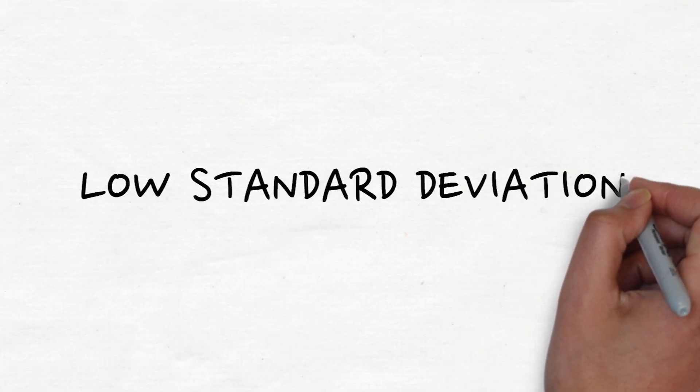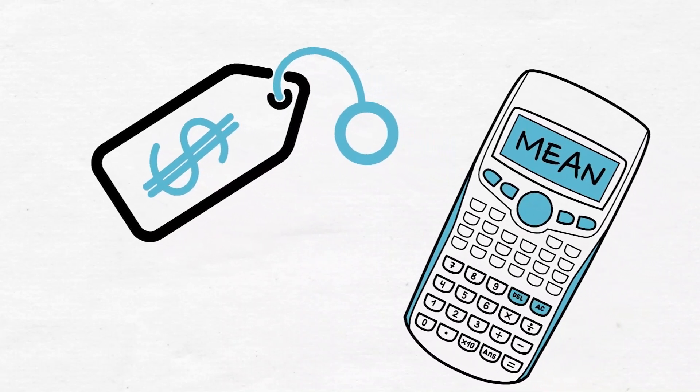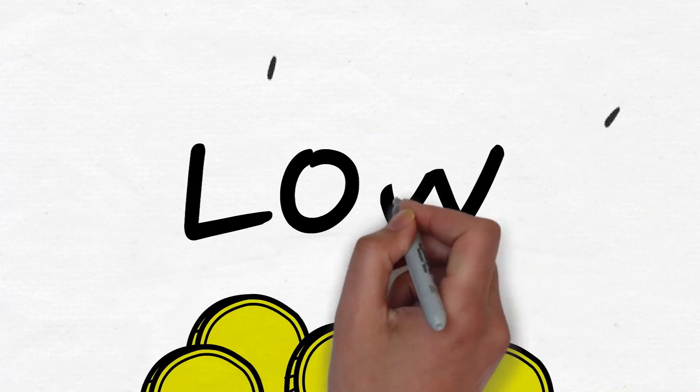A low standard deviation typically means that the price stays close to the average. Therefore, the asset is understood to have low volatility.